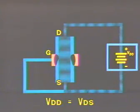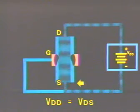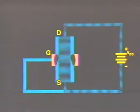VDD is the supply voltage for conduction in the drain source circuit and is the same as V sub DS, the voltage across the drain and source leads. VDD is set up with the proper polarity to attract the majority carriers in the channel and thereby establish drain current.